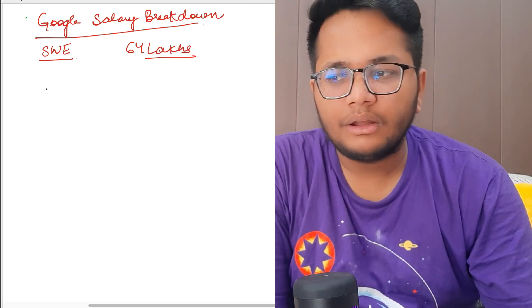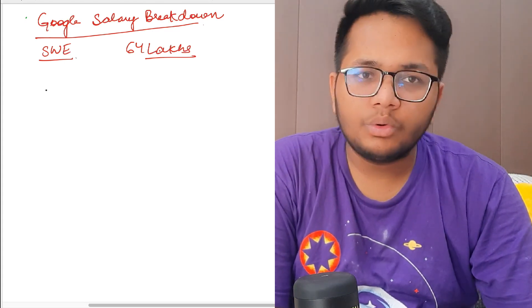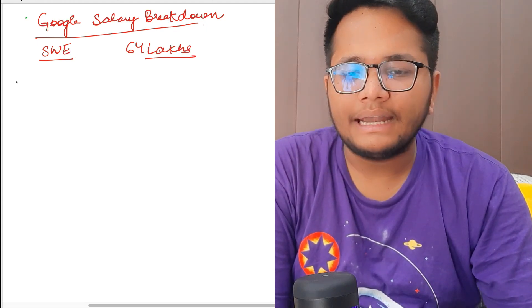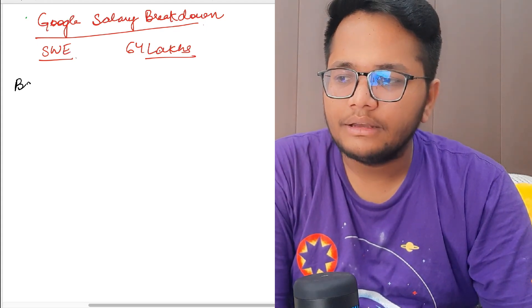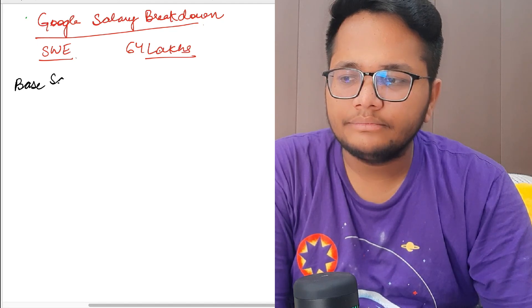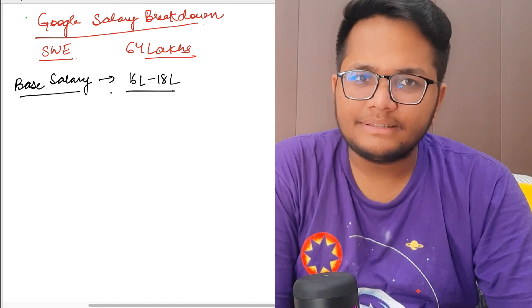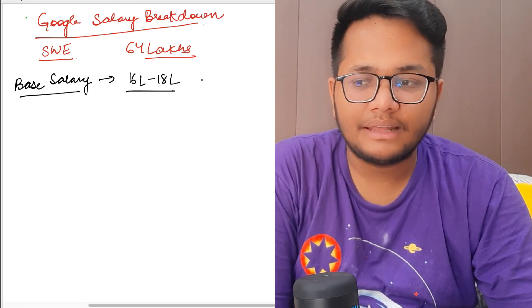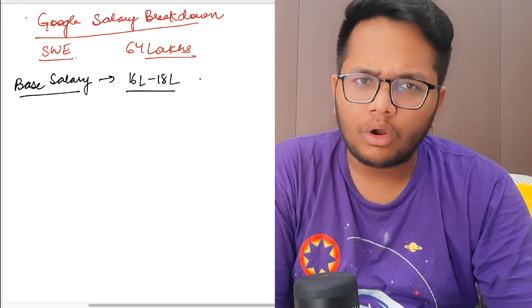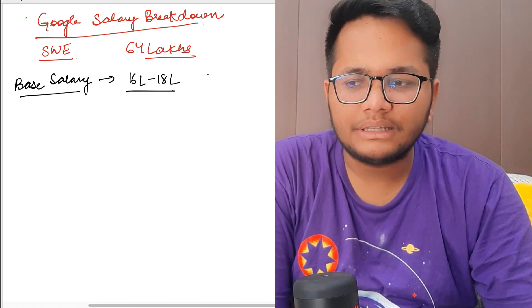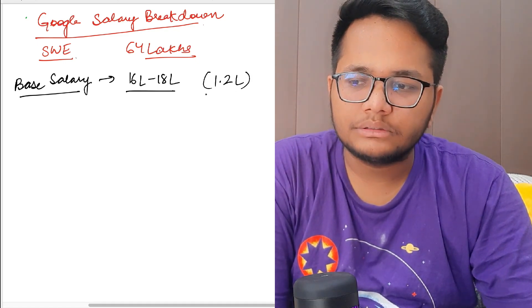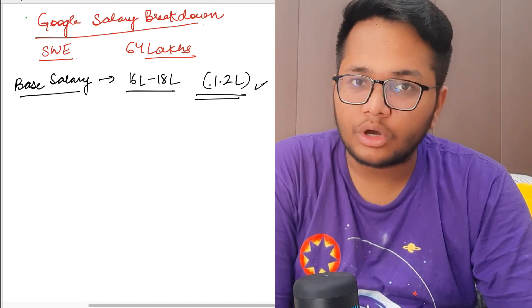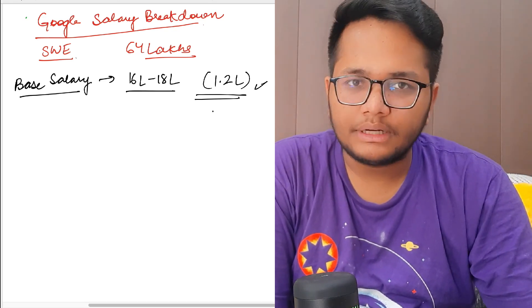If we talk about salary breakdown of Google as a software engineer, Google offers a CTC of 64 lakhs. Out of the 64 lakhs, let's categorize first the base salary. The base salary is 16 lakhs to 18 lakhs. Out of the 16 lakhs and 18 lakhs, after all taxes and everything, monthly you get around 1.2 lakhs. This is what you will get in your bank account as your monthly salary after all the taxes are cut.